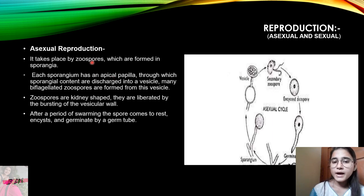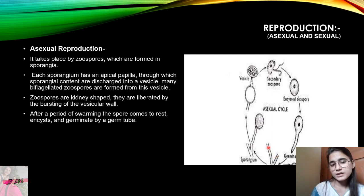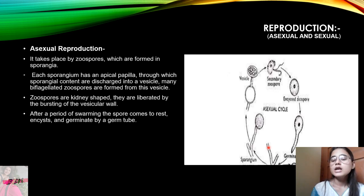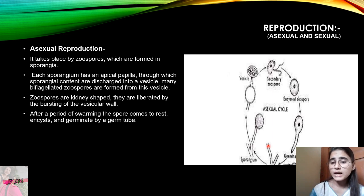Asexual reproduction takes place by zoospore formation. The zoospores are formed in sporangia. Looking at the life cycle diagram, we start from the fungal mycelium — the hyphae. When the fungus gets favorable conditions such as proper host, moisture, food, and environment, it will reproduce asexually. The hyphae develop into a sporangium structure — the sporangium is a vesicle-like structure.